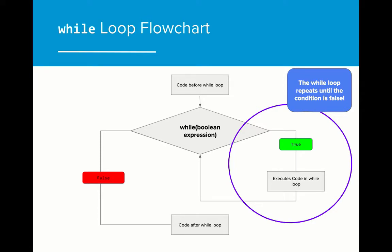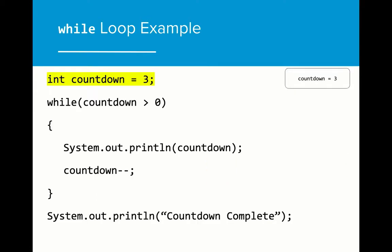Let's take a look at an example. Here we have created a simple countdown program using a while loop. We've created a variable called countdown and set the boolean expression to be countdown greater than zero, indicating that if countdown is greater than zero, the while loop will execute. It's incredibly important that the countdown variable is initialized before the start of the while loop because the while loop relies on the countdown variable to decrease every time through the loop. Without this, our while loop would run infinitely.